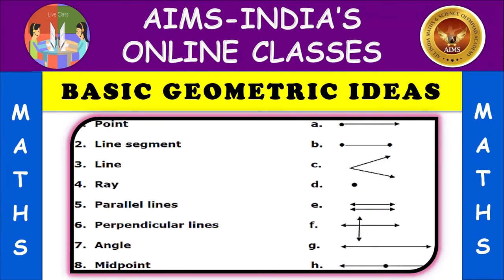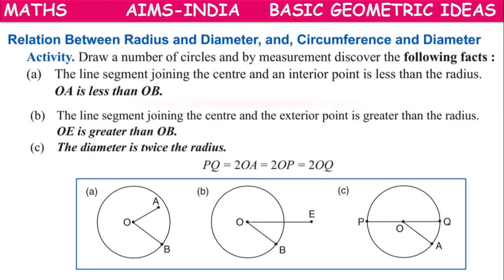Hello Chiran, welcome to AIMS India's online classes. Today from Mathematics Subject, Basic Geometric Ideas topic we are going to discuss. Our today's concept is regarding a relation between radius and diameter, and circumference and diameter of a circle.